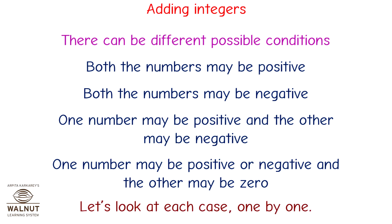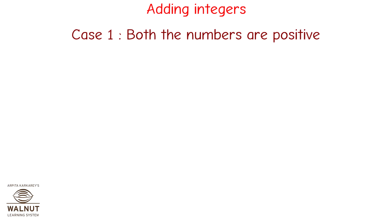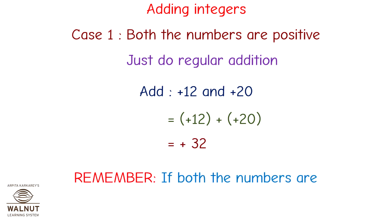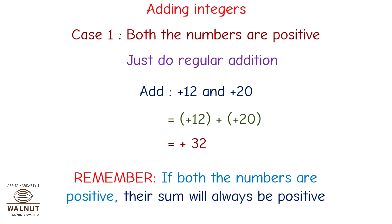Let's look at each case one by one. Case 1: both the numbers are positive — just do regular addition. Plus 12 and plus 20 is equal to plus 32. Remember, if both the numbers are positive, their sum will always be positive.